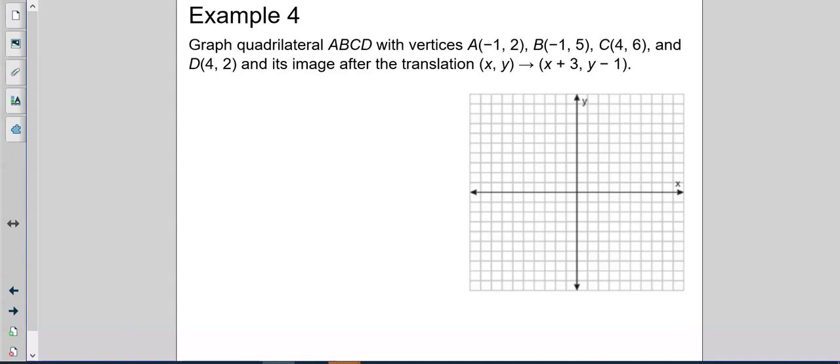Graph quadrilateral A, B, C, D. So A is at negative 1, 2. Left 1, up 2. And, guys, this whole unit is about graphing. So you've got to be able to graph correctly. We move X, then Y. Then negative 1, positive 5. So that's just going to go up 3 more. 1, 2, 3. Then 4, 6. And 4, 2. So almost a rectangle, but not quite. So here's A, B, C, D.